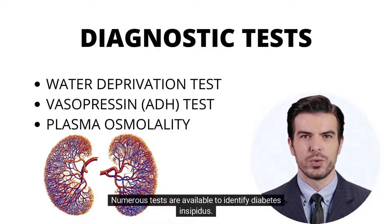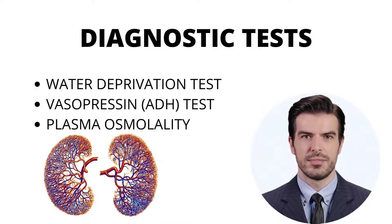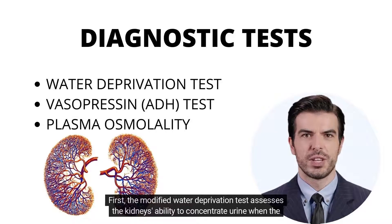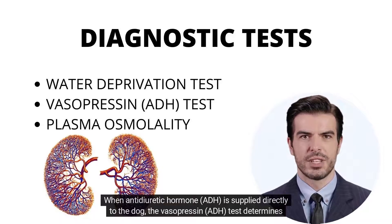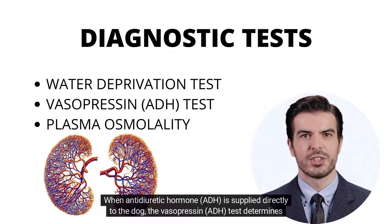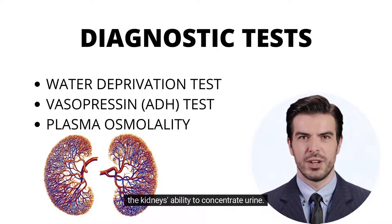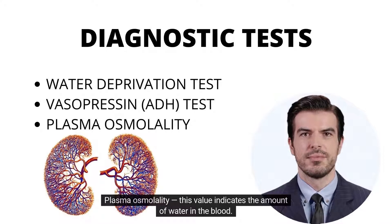Numerous tests are available to identify diabetes insipidus. Three of the most prevalent are as follows. First, the modified water deprivation test assesses the kidneys' ability to concentrate urine when the dog is denied water. The vasopressin ADH test determines the kidneys' ability to concentrate urine when antidiuretic hormone ADH is supplied directly to the dog. Plasma osmolality indicates the amount of water in the blood.